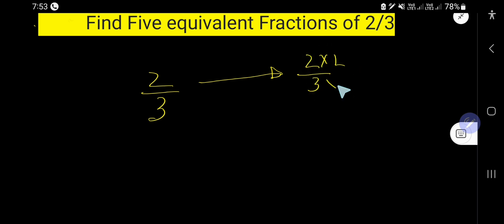Just multiply both numerator and denominator by 2. You are getting here 4 and 6. So this is the first equivalent fraction.